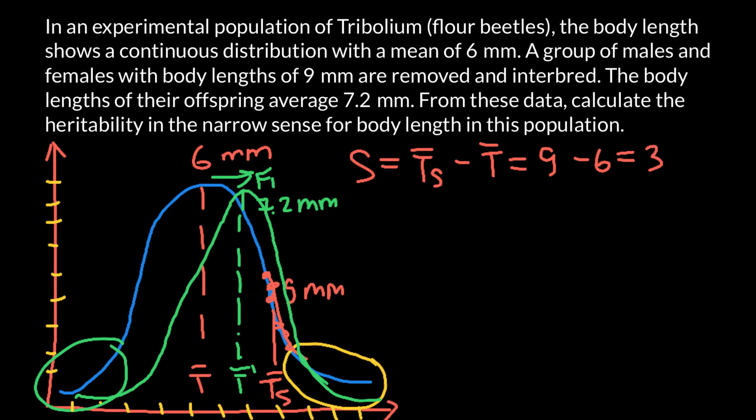Now let's find the response to selection. The selection response is how much gain you make when you're mating the selected parents. And we use capital R. So the mean of the F1 generation minus the mean of the base population. And the mean of the F1 generation is 7.2 millimeters, and the mean of the base population is 6. So the difference is 1.2.